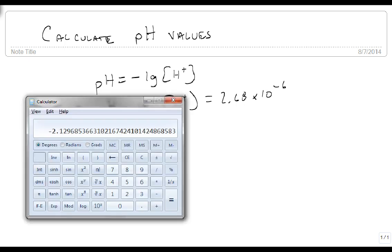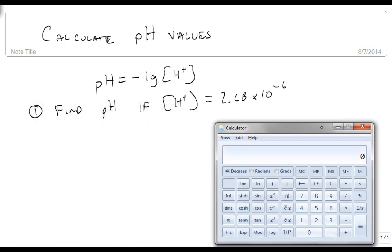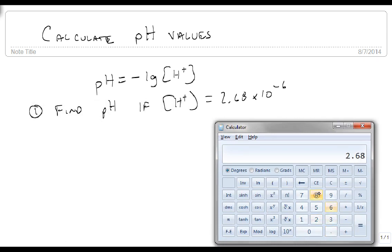So here we're just going to get out our calculator, and we're going to say 2.68 times 10 raised to the negative 6. We're going to hit our log button. Notice it's L-O-G specifically.